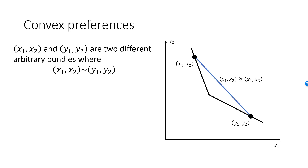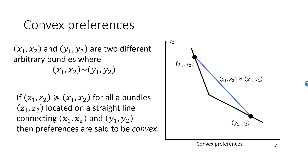Now imagine picking the first bundle, X1, X2, anywhere on the steeper part of the indifference curve, and the second bundle, Y1, Y2, anywhere on the indifference curve where it is less steep. If you draw a straight line between these two bundles, the same thing will be true: every bundle on this straight blue line will be weakly preferred to the bundles on the indifference curve. If this holds no matter how you pick the X bundle and the Y bundle, and no matter which indifference curve we begin with, then we say that preferences are convex. If all indifference curves consist of two connected straight lines where the left one is steeper, then preferences will be convex.